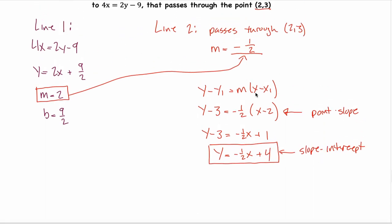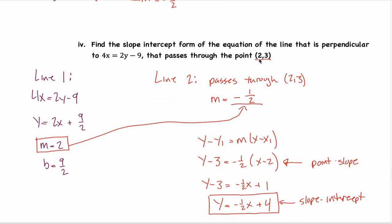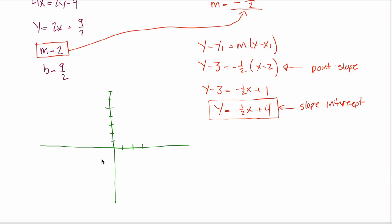This is the slope-intercept form of Line 2, the line perpendicular to Line 1 that passes through (2, 3). For the visual learner: Line 1 has a y-intercept of 9 halves, crossing between 4 and 5 on the y-axis, with slope 2 going up 2 units for every 1 right. Line 2 has a y-intercept of 4, crosses just below Line 1, and with slope negative 1/2 goes down 1 unit for every 2 to the right. The two lines appear perpendicular on the graph. That's all on parallel and perpendicular lines.